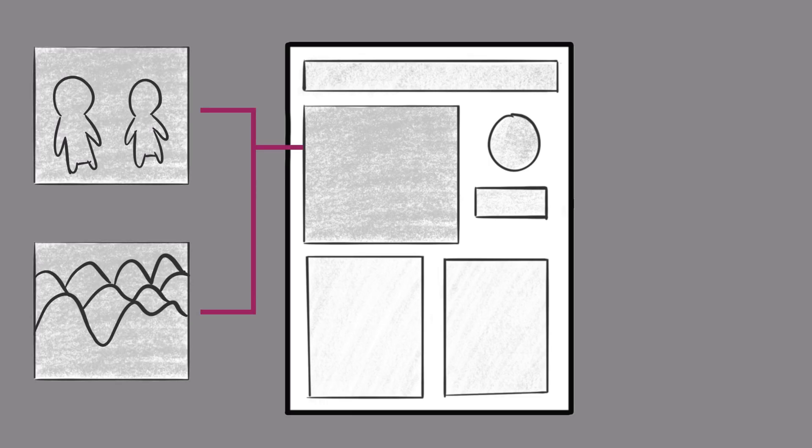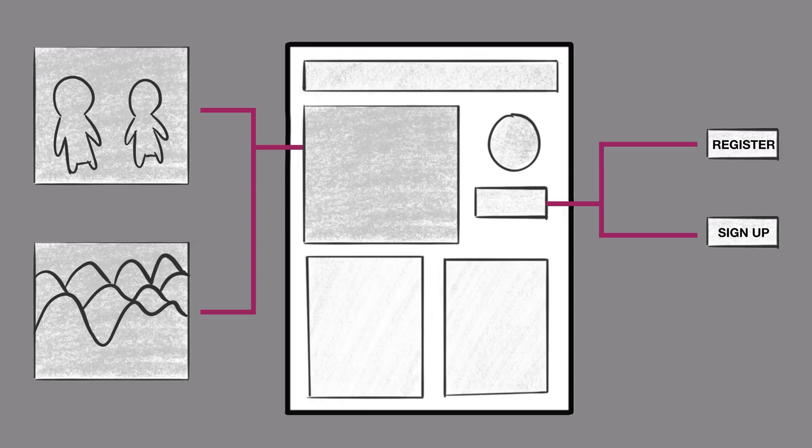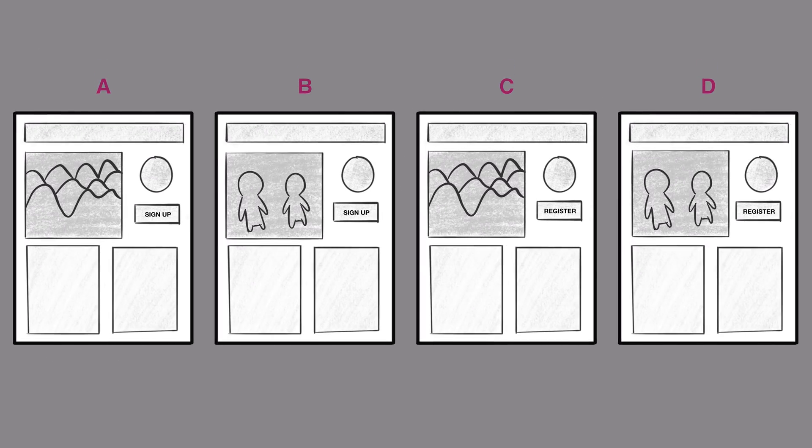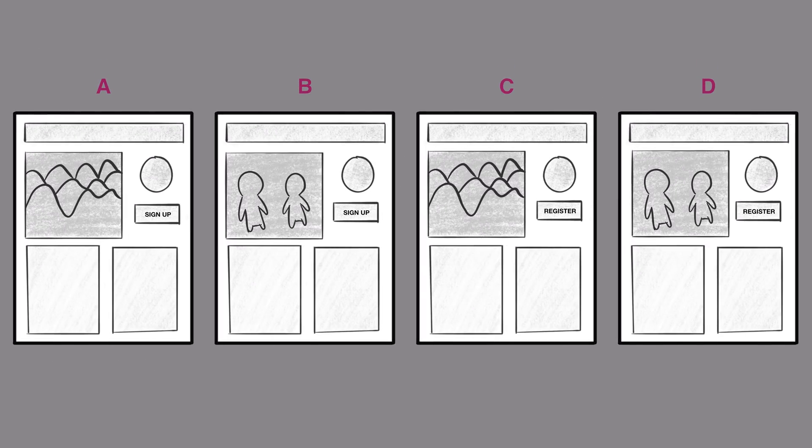Here's where multivariate testing can have an advantage. In multivariate testing, you test every possible combination of the different UI elements that you're considering changing. So if you're considering changing the image and the call-to-action text on a landing page, you'll test every possible combination of those variables. That way you can determine which change, or which combination of changes, will have the greatest impact.